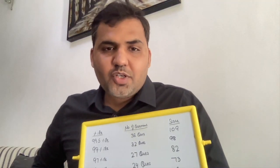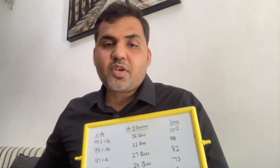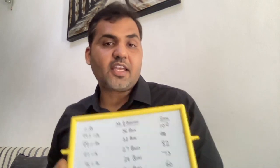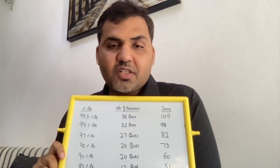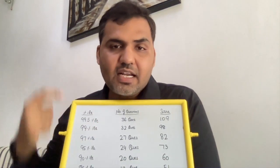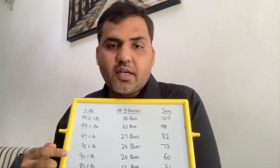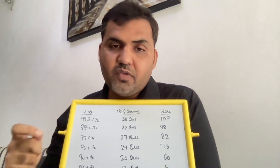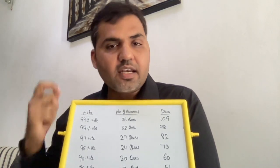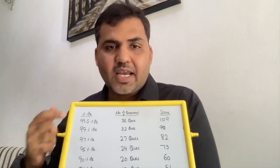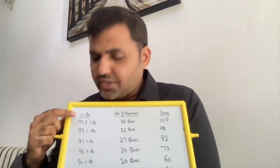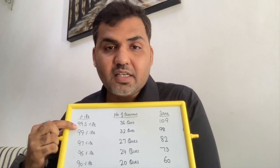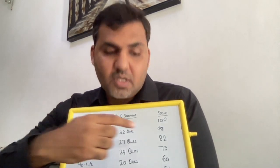Hello everyone. In this video we are going to talk about CAT score versus percentile. I have this board which shows the percentile and the scores, based on the previous year's data and cutoffs. As per last year, if you want to get 99.5 percentile, the total score you need is 109.